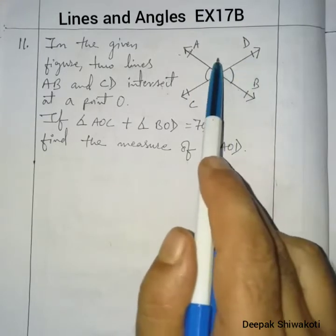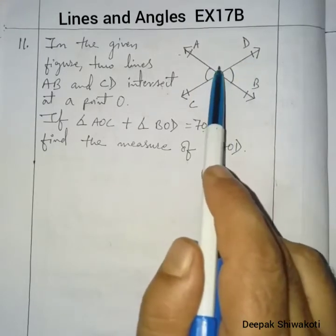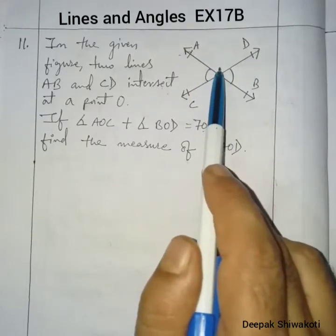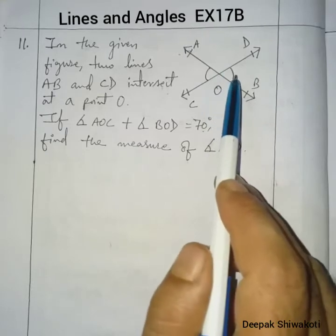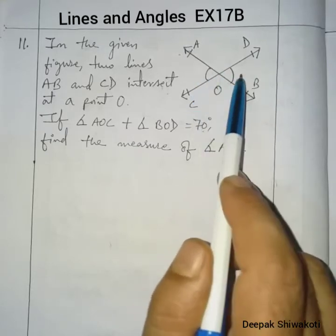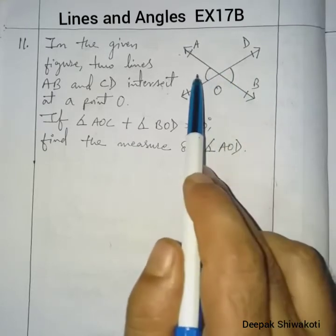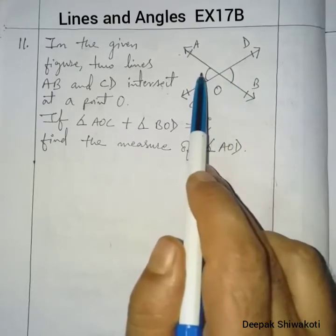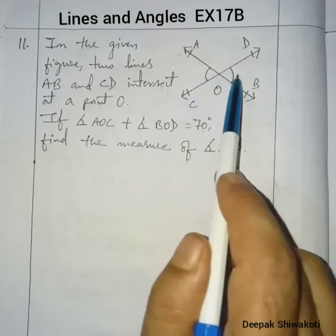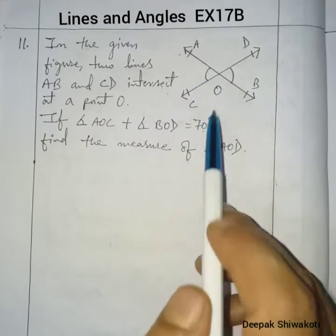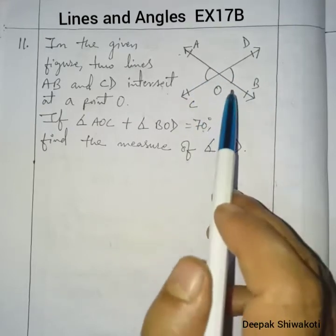We have to find the measure of this angle. Now if you see this, these two angles are vertically opposite to each other, and the sum of these two angles is equal to 70 degrees.